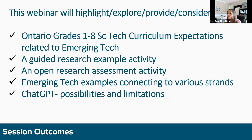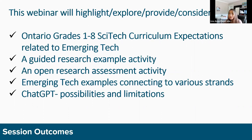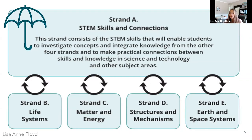Our plan today is to consider the Ontario grades one to eight science and technology curriculum expectations related to emerging technology. I'll provide an example guided research activity, then suggest a more open-ended activity for grades six to eight. We'll check out emerging tech examples connecting to various strands, and also talk about ChatGPT's possibilities and limitations.